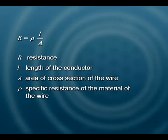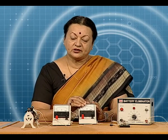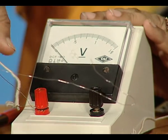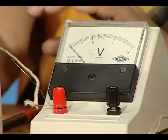We also know that for a conductor like a wire, the resistance depends upon the material — which is its specific resistance — the length of the wire, and the area of cross section A. Let us make use of all this knowledge and try to find the resistance of this wire first.